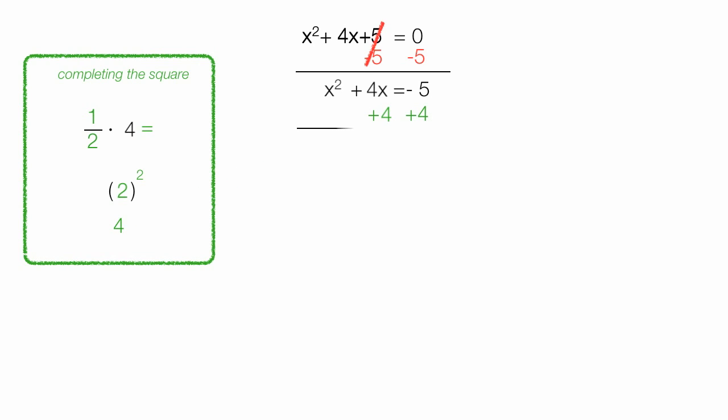I add that 4 to both sides of the equation, which gives me x squared plus 4x plus 4 is equal to negative 1.